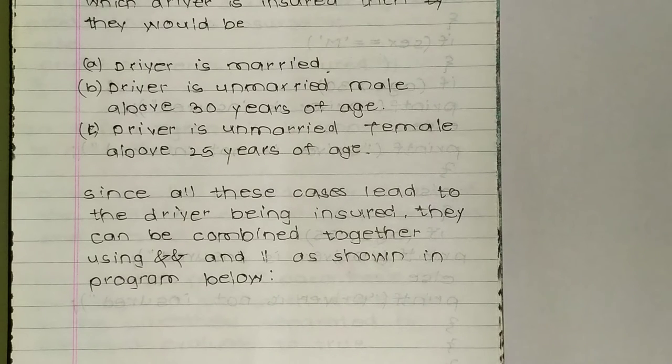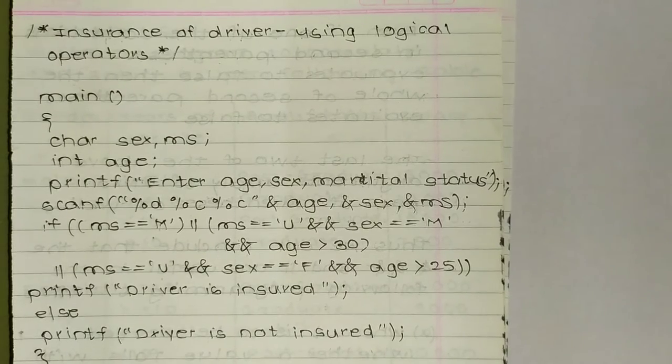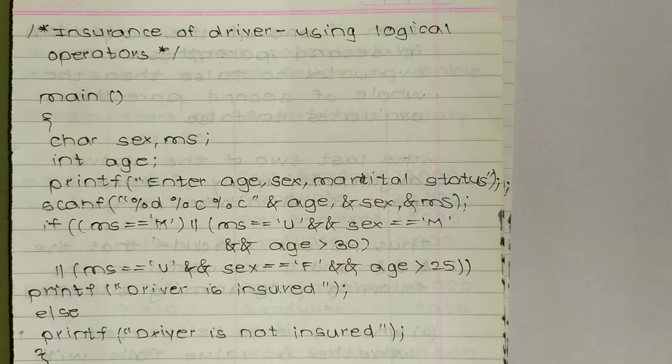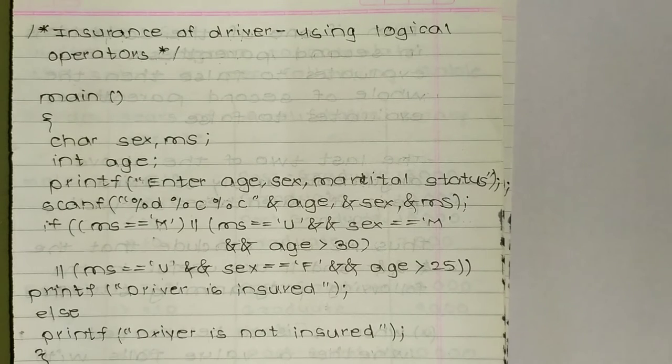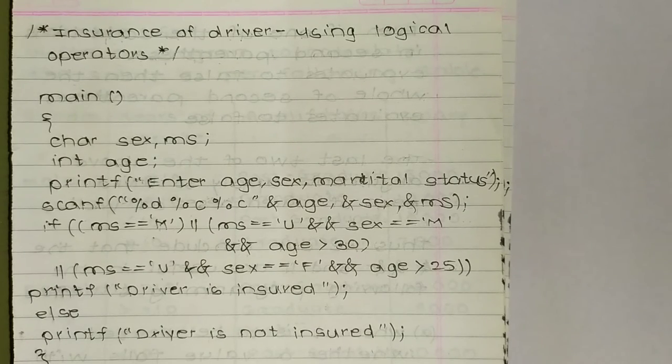First line is main which is compulsory, then char sex, ms; int age. So age is integer and sex and ms are characters. Now printf 'enter age, sex, marital status', we are asking the user to enter these things, which was same as example 2.5.